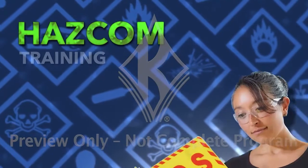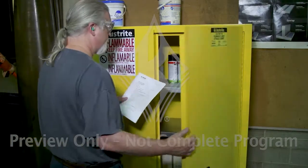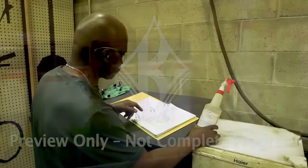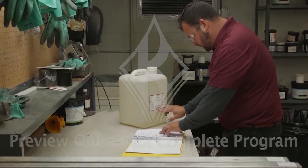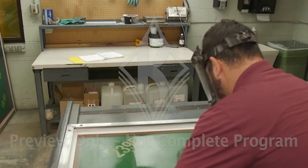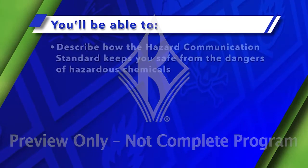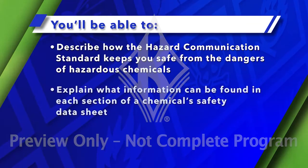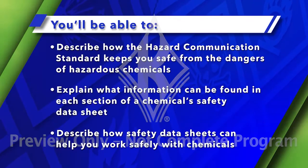Welcome to Hazcom Training. This module is all about GHS Safety Data Sheets. Chemicals are often needed to help make many of the products we use, and incidents and injuries are always possible with hazardous chemicals. By knowing their safety requirements, you can greatly decrease the risks. When you're done with this training, you'll be able to describe how the Hazard Communication Standard keeps you safe, explain what information can be found in each section of a chemical's Safety Data Sheet, and describe how Safety Data Sheets can help you work safely with chemicals.